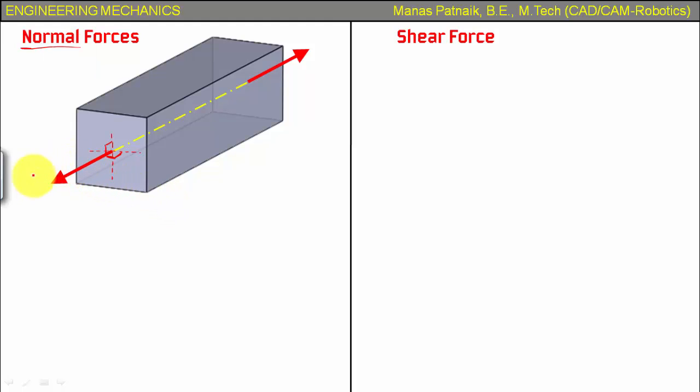Now the nature of this force is such that it tries to lengthen the bar, or I can also say it tries to increase the length of the bar, and hence the name of the force is what you call tensile force. The force which tries to pull the bar from both directions or tries to increase the length of the bar is something that you generally refer to as a tensile force.